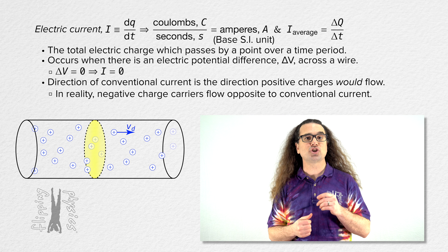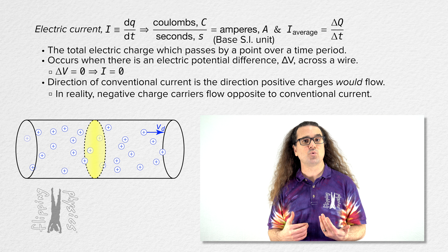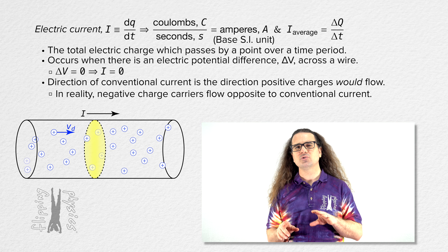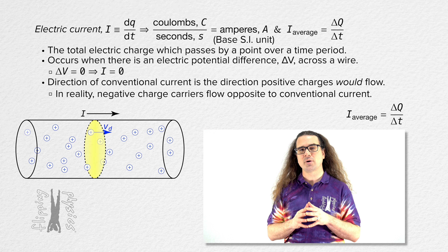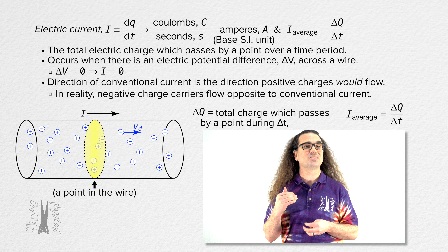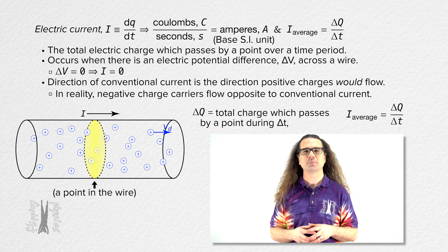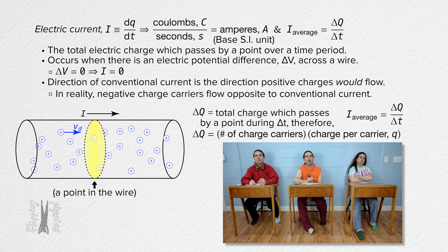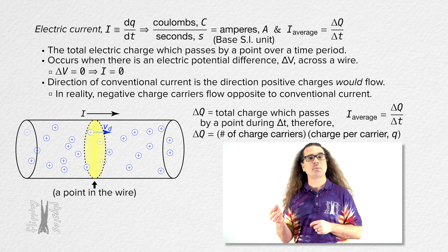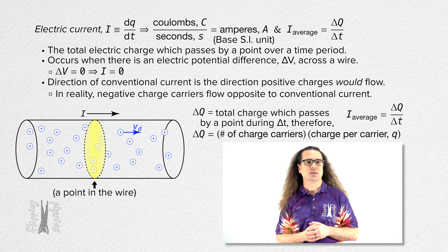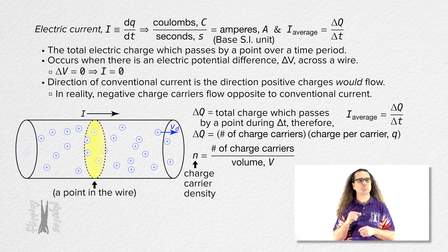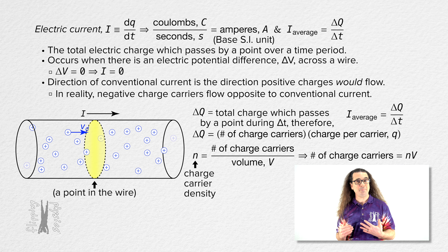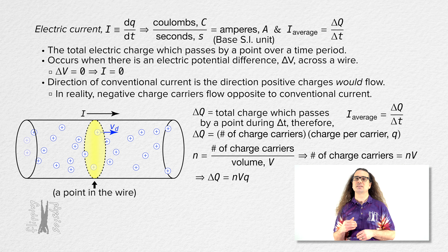Let's take a look at a figure showing charges flowing in a wire. We have modeled this with positive charges which have a velocity to the right in the wire, and that is the direction of the conventional current. Using the equation for average current, delta Q is the total amount of charge which passes by during a change in time. Delta Q equals the number of charge carriers which pass by a point during a change in time multiplied by the charge per carrier, little q. Charge carrier density, whose symbol is lowercase n, equals the number of charge carriers per unit volume. The number of charge carriers equals charge carrier density times volume. Therefore, delta Q equals charge carrier density times volume times charge per carrier.